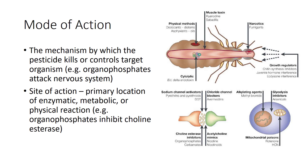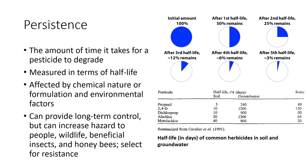Different life stages of a pest have different susceptibilities to pesticides due to biological and physical characteristics. Applying a pesticide when the most vulnerable life stage of the pest is present increases the effectiveness of control. Persistence indicates the amount of time it takes for a pesticide to degrade, measured in terms of half-life — the time for the material to be reduced to half the amount of active ingredient originally applied. The half-life may be affected by chemical nature, formulation, soil microbes, ultraviolet light, heat, and the pH of water used in mixing. The half-life in soil is relatively quick, but if the pesticide enters groundwater, the time increases 20 to 120 times.